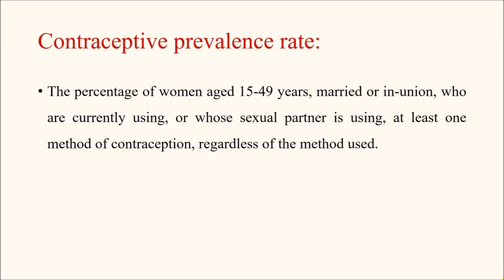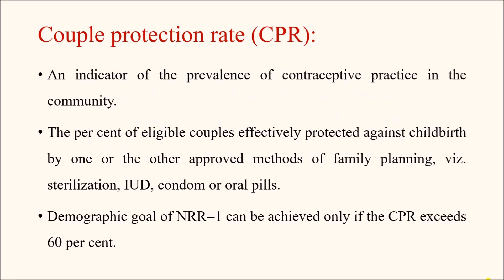Contraceptive Prevalence Rate is the percentage of women belonging to the reproductive age group — that is 15 to 49 years of age — who are married or in union (including couples who are not married but staying together) who are currently using, or whose partners are currently using, at least one method of contraception, regardless of the method used. So all couples, married or unmarried, using any method are considered for this calculation.